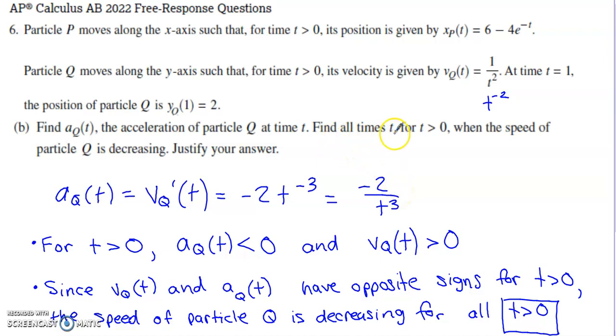The next step is to find all times T, only dealing with positive times, when the speed of particle Q is decreasing. I need to analyze both velocity and acceleration to build a conclusion about speed. When velocity and acceleration have the same sign, they're working together and speed would be increasing. When velocity and acceleration have differing signs, they're working against each other and speed would be decreasing. I'm thinking about my acceleration function. If I'm putting a positive in place of T, my denominator is always positive, my numerator is always negative. Therefore, for positive T's, my acceleration is always less than zero. My acceleration is always negative.